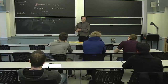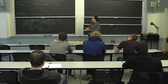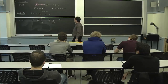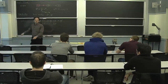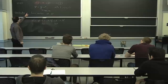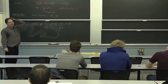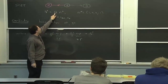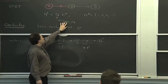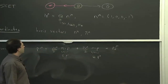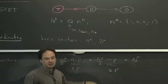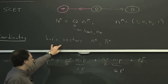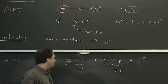Last time we started talking about SCET. It's going to be a theory that can describe energetic hadrons and energetic jets. Our first example was discussing a process with an energetic hadron, which is this pink pion. The pion has a large momentum, large energy — much bigger than lambda QCD, much bigger than m_pi. It moves basically along a light cone direction, which motivated us to use light cone coordinates. So we introduced an n and an n-bar.